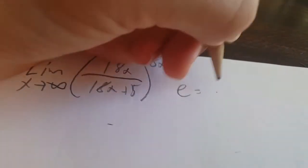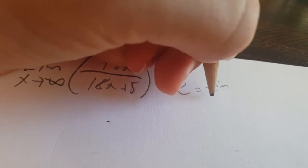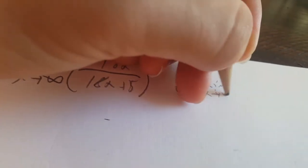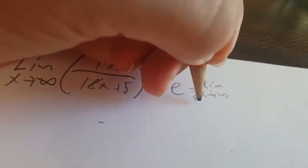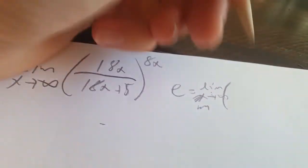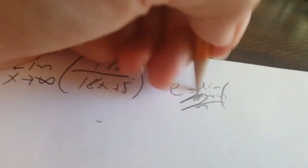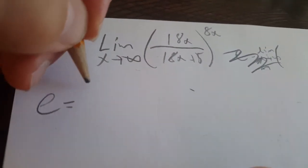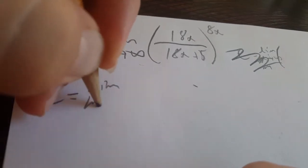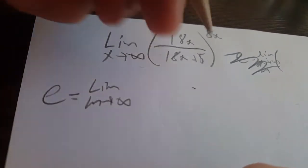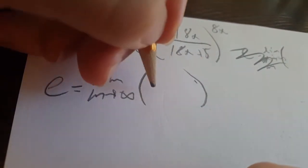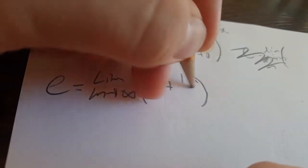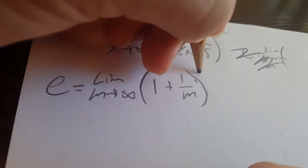So, that would be e equals limit as m is approaching infinity. That's supposed to mean m, sorry. I'm doing this with the hand, but limit as m is approaching infinity of 1 plus 1 over m to the m.